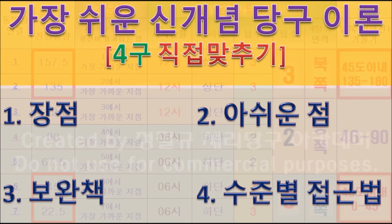지금까지 살펴본 가장 쉬운 신개념 당구이론은 4구에서 직접 맞추기에 적용되는 이론입니다. 본 이론의 장점과 아쉬운 점을 살펴보겠습니다. 이번 시간에는 아쉬운 점에 대한 보완책을 모색하고, 추가로 초급자용 접근법도 안내하겠습니다.